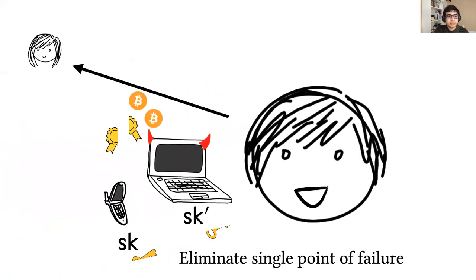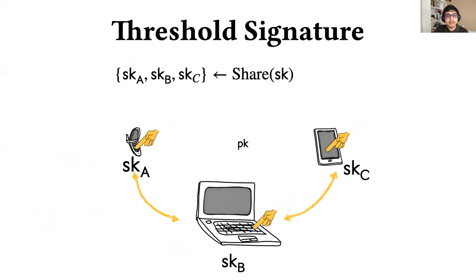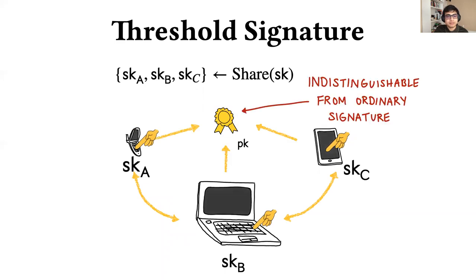In order to mitigate this, Bob could employ a technique by which he splits his signing key into multiple fragments, so that even if one fragment is compromised, the secret key stays safe. This notion is achieved by threshold signature, where the secret key can be split into multiple fragments and stored on different devices, and the devices must interact and collaboratively sign messages. The important thing is that the signature that comes out of the system looks just as though it came from an execution of the regular single-party signing algorithm.